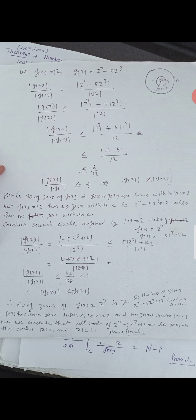On C1: |G(z)| / |F(z)| = |z⁷ - 5z³| / 12 ≤ (|z|⁷ + 5|z|³) / 12 = (1 + 5) / 12 = 6/12 = 1/2 < 1. So |G(z)| < |F(z)| on C1. Hence by Rouché's theorem, F(z) = 12 and F(z) + G(z) = z⁷ - 5z³ + 12 have the same number of zeros inside C1. But F(z) = 12 has no zero within C1, so z⁷ - 5z³ + 12 also has no zero within C1.